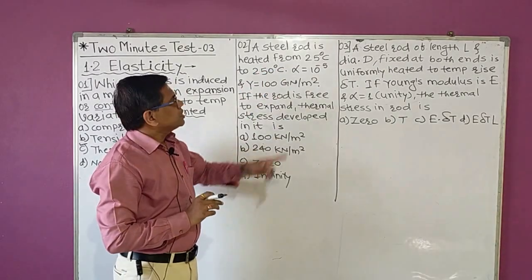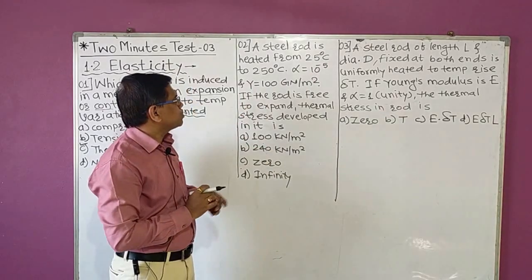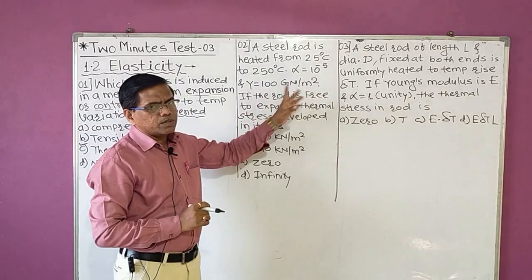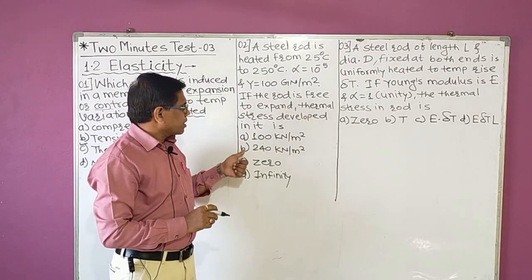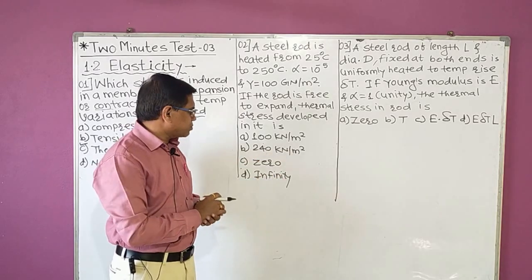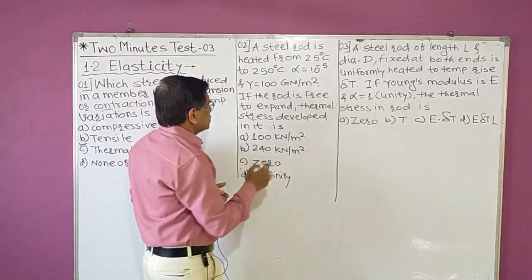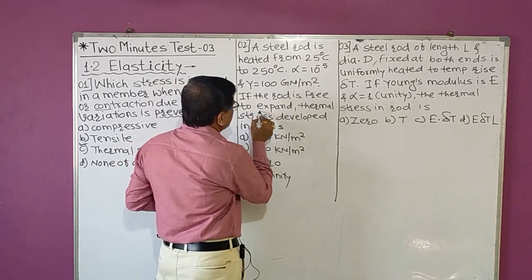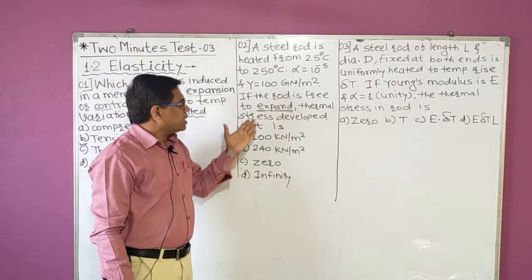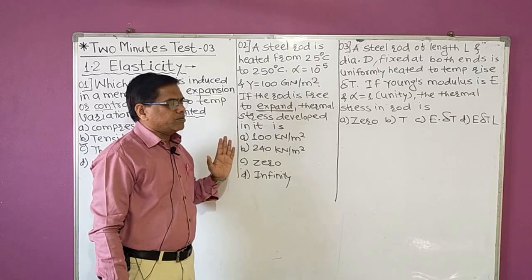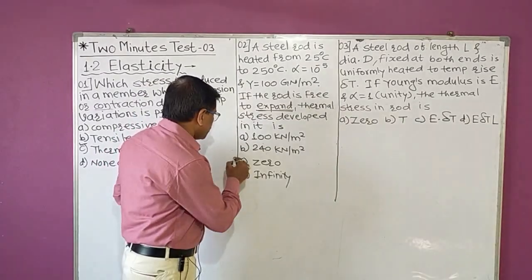Thermal stress MCQ 2: A steel rod is heated from 25°C to 250°C; alpha = 10⁻⁵ per degree, Y = 100 GPa. If the rod is free to expand, the thermal stress developed is — options 100 kN/m², 240 kN/m², 0, or infinity. The key phrase is 'free to expand' — thermal expansion is not prevented, so no thermal stress develops. Answer is option C: 0.